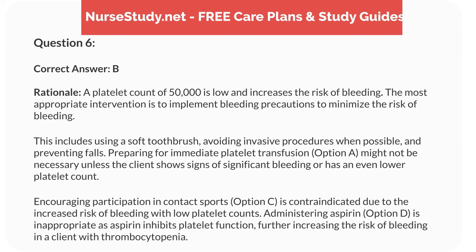Correct answer: b. Rationale: a platelet count of 50,000 is low and increases the risk of bleeding. The most appropriate intervention is to implement bleeding precautions to minimize the risk of bleeding. This includes using a soft toothbrush, avoiding invasive procedures when possible, and preventing falls. Preparing for immediate platelet transfusion, option A, might not be necessary unless the client shows signs of significant bleeding or has an even lower platelet count. Encouraging participation in contact sports, option C, is contraindicated due to the increased risk of bleeding with low platelet counts. Administering aspirin, option D, is inappropriate as aspirin inhibits platelet function, further increasing the risk of bleeding in a client with thrombocytopenia.